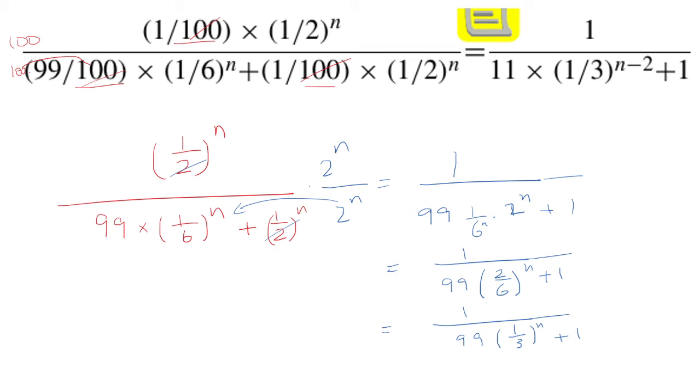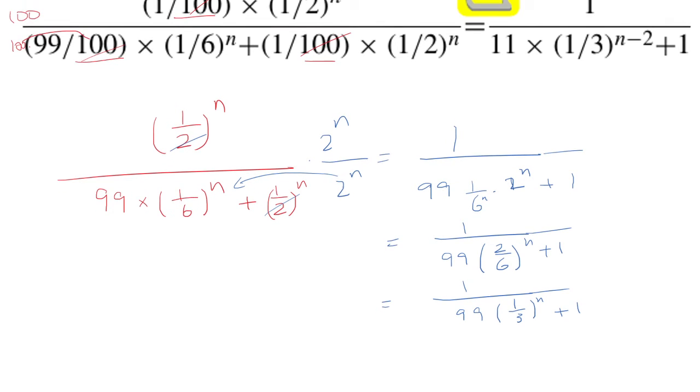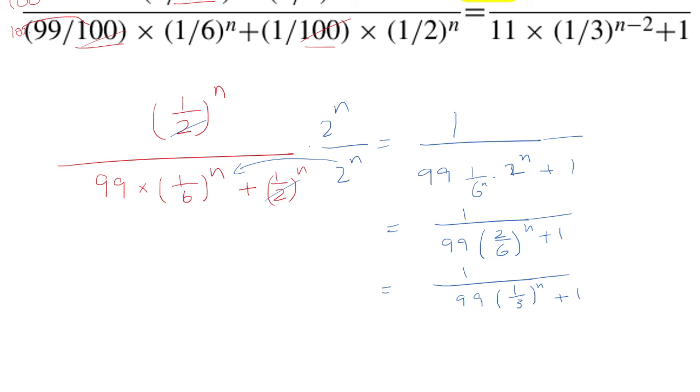So we're going to go one step further and break up the 99 as 11 × 9. And 9 is 3².